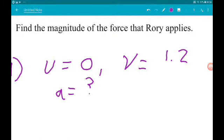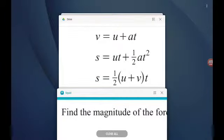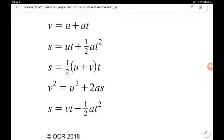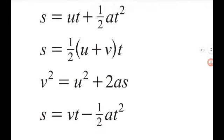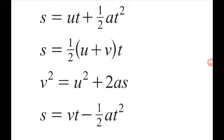So is there a Suvat equation that links u, v, a, and s? You're given these in the formula part at the start. The one that we want is v squared is u squared add 2as.